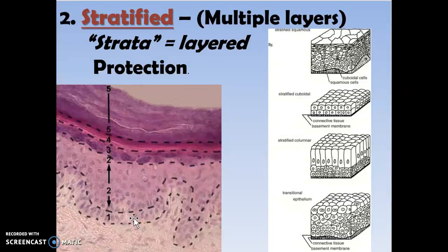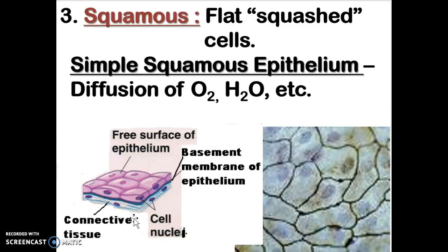You've got stratified squamous all on the outside of you, including from your mouth to your anus, because as you eat food it scratches down and takes off some of the surface layers. Squamous means flat, squashed — little flat cells. It's good for diffusion of oxygen and water. It also allows you to build up like armor plating on the outside, and they slough off nicely.